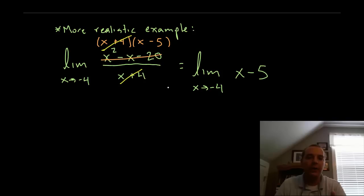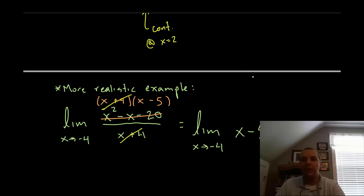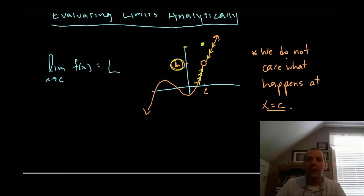There is one exception though: when x happens to be the one value of negative 4, then you get 0 over 0. Everything else you get 1 but at negative 4 you get 0 over 0. So if you wanted to be very technically correct about it we would say that this equals this function except at negative 4. But you know what, lucky for us, what did I say earlier? I don't care what happens at negative 4.